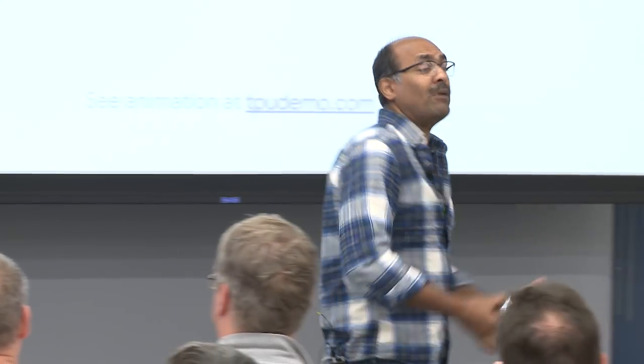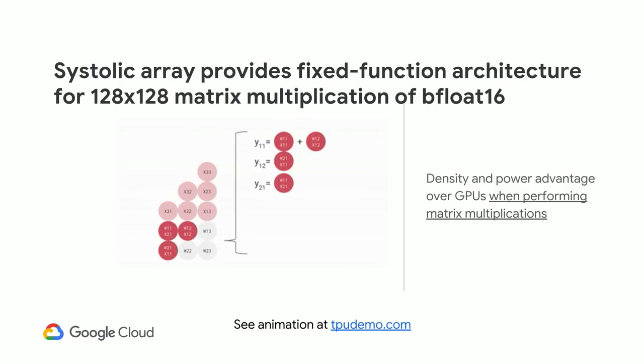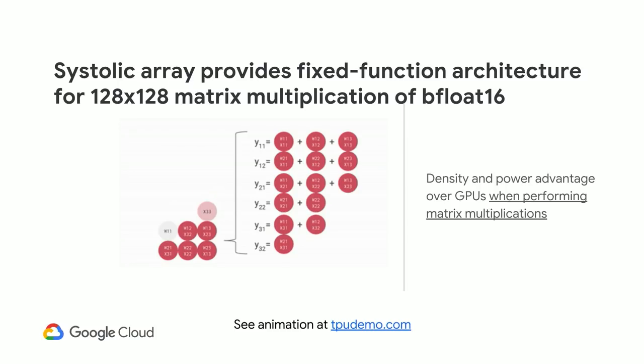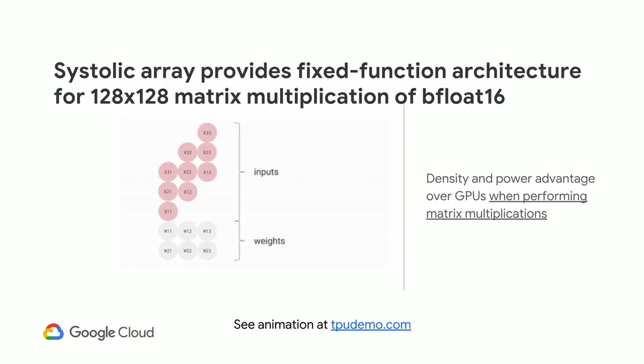The matrix multiplication unit is where all the power comes in. Machine learning is essentially linear algebra — matrix multiplication. So you build a system that does matrix multiplication very fast and nothing else. If a CPU does scalar math and a GPU does vector math, a TPU does tensor math — it's a fixed-function architecture just focusing on matrices and matrix multiplication, packing a lot of power and density because it doesn't have to do anything else.